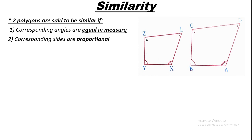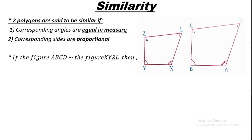The second polygon is called XYZL. We can say figure ABCD is similar to figure XYZL. Note there is a new symbol for similarity, which looks like a dash or tilde, similar to what we have for congruence.